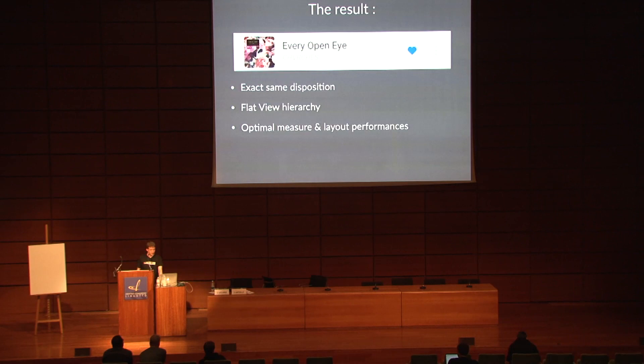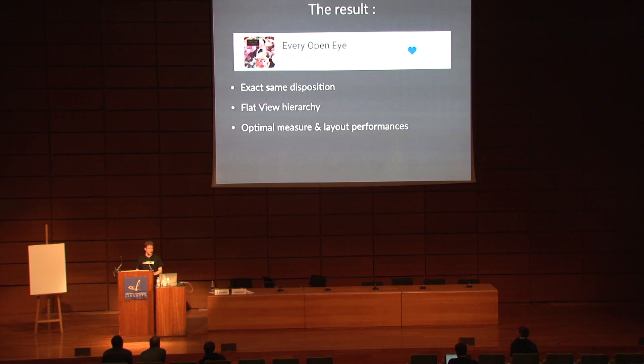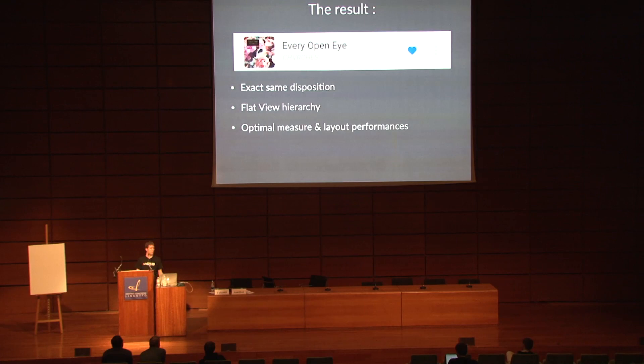The result, once we have done that for each view, is the exact same disposition we had for the RelativeLayout implementation — but this time, we are flat. We don't have any nesting, and we get pretty much the optimal measure and layout performance we can have on the platform. That way, we've addressed the bottleneck and gone as fast as possible. Hopefully it's enough — if it is not, let's go back to measuring our performances and optimize another view. At the end of the day, it should be enough to get relatively smooth scrolling even on low-end devices.